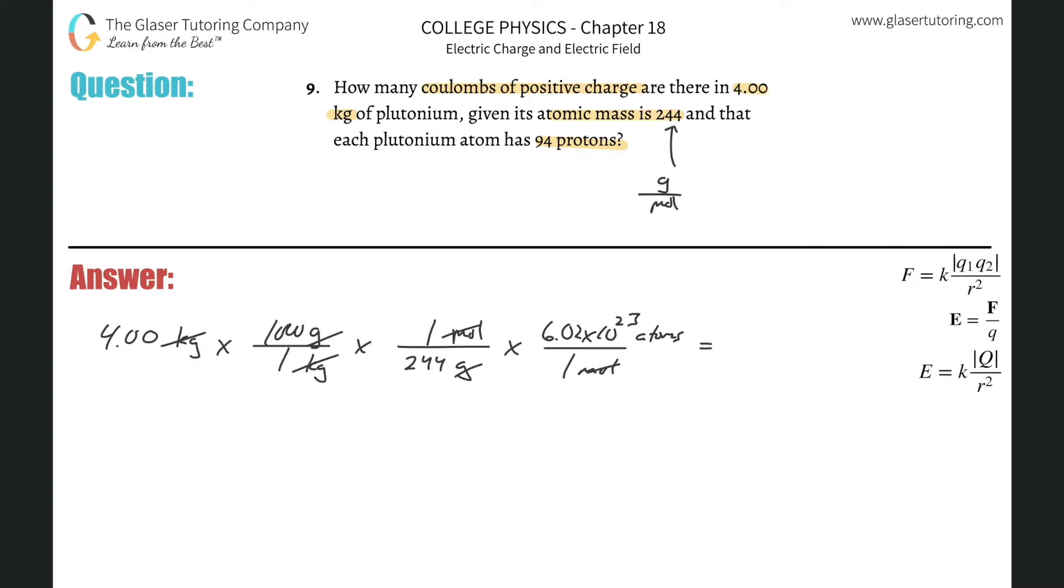So why don't we just calculate it? We're not done with the problem, but let's calculate it. Four times a thousand times 6.02 times 10 to the 23rd divided by 244. And we get a value here of about 9.87 times 10 to the 24th, and that will represent atoms of plutonium.